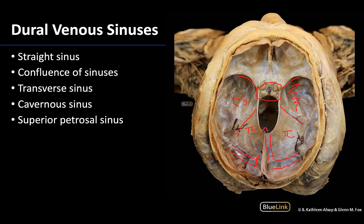I just drew a line over the top of the petrous part of the temporal bone, and you can see a little bit of blue right around this region here. That's likely part of the superior petrous sinus, which is located on the superior portions of the petrous part of the temporal bone. The cavernous sinuses actually drain into the petrous sinuses — there's a superior and an inferior. You can really only see the superior here because we'd have to remove some of the tentorium cerebelli. The superior petrous sinus will drain into the proximal sigmoid sinus.